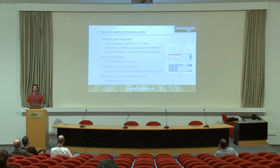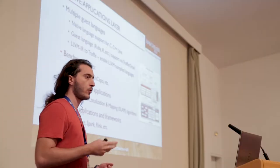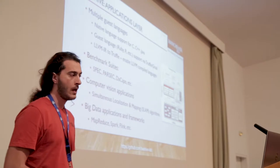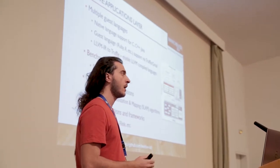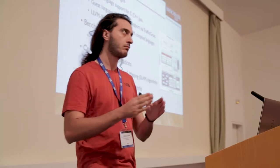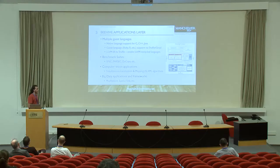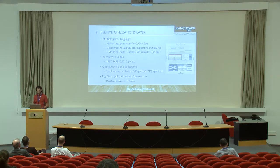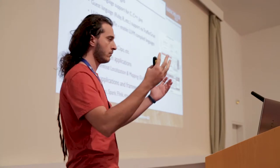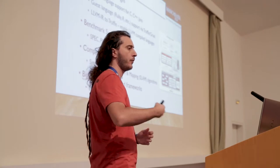On the applications layer, we want to support multiple programming languages. We aim for native language support for C, C++, and Java. For guest languages like Ruby and R, we aim to support them through the Truffle runtime framework and Graal compiler. Truffle is a framework for implementing interpreted languages, and Graal is a just-in-time compiler for Java written in Java. Using Truffle, we can execute LLVM intermediate representation code, allowing us to run languages supported by LLVM, making Beehive capable of running multiple different languages.